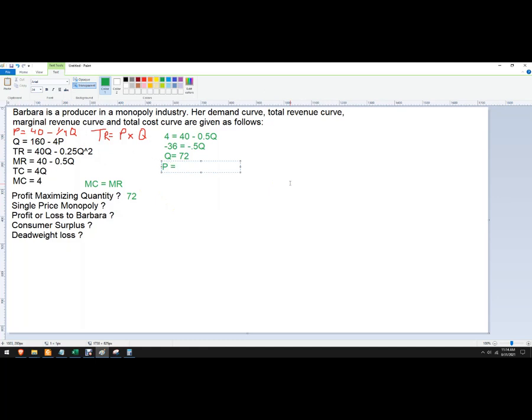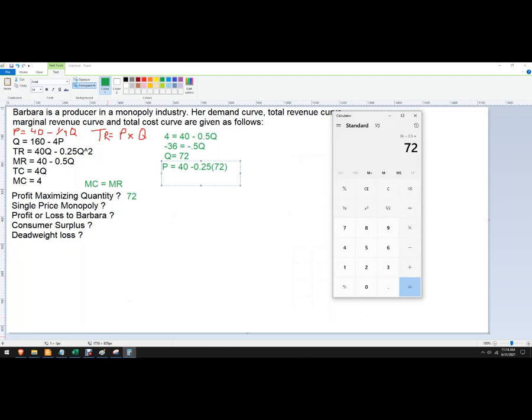So P equals 40 minus 0.25 times 72. So that's going to be 0.25 times 72 is 18. 40 minus 18 is 22. So our price is going to be 22.